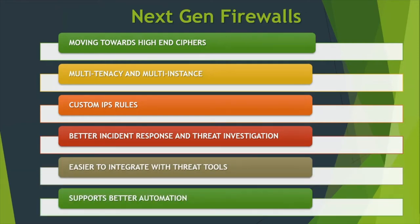Starting with next-generation firewalls: there's nothing wrong with existing firewalls, but for zero trust, a next-generation firewall is a better fit because of its more flexible approach — better handling of ciphers, inclusion and remediation of old ciphers. You can create multiple sub-instances from a single instance, also hosted over cloud services in a lightweight fashion. There's more granularity over network traffic, and the intrusion prevention system is what defines the line between a normal firewall and a next-generation firewall. You can integrate it with multiple services for incident response and threat detection, and it's easier to integrate using network automation tools such as APIs.